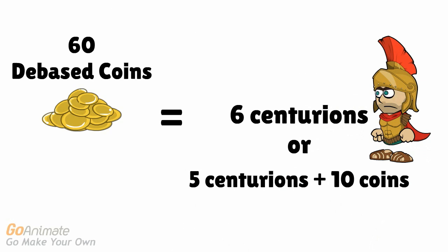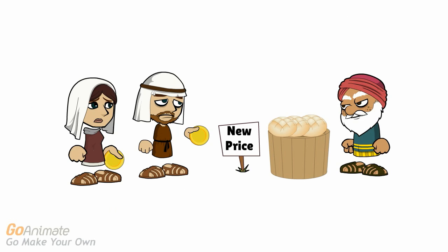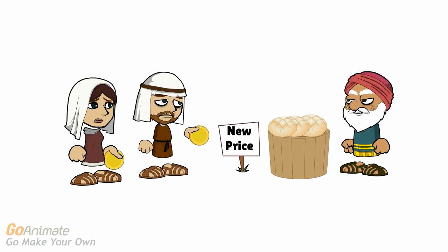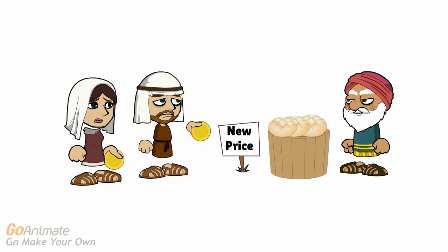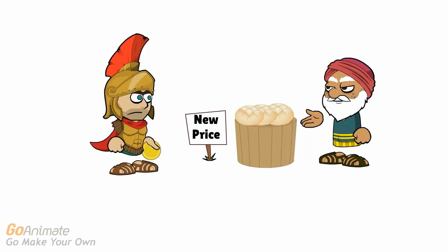Initially, everyone is happy. The soldiers have more money and buy more goods from the merchants. The merchants have more money and buy more goods from manufacturers and farmers. The manufacturers and farmers are happy because they have more money, and so on. However, by the time the money gets to the farmers, the merchant has found that the money was debased. To make the same profit as before, he now raises his prices, which makes the farmers' money worth less. They, of course, raise their prices to the merchant. The next time the soldier visits the merchant, the prices are higher and he finds he can afford fewer goods than before.